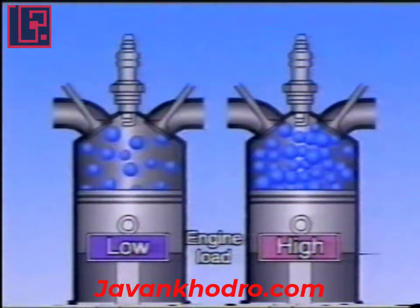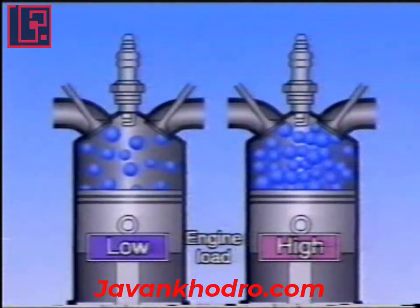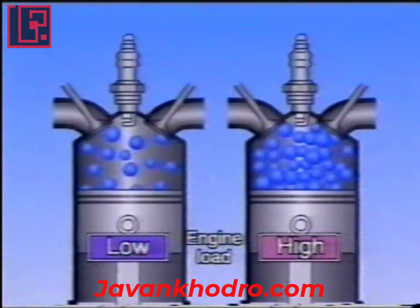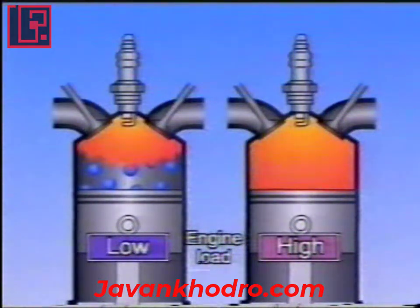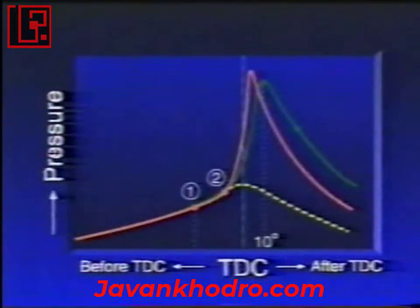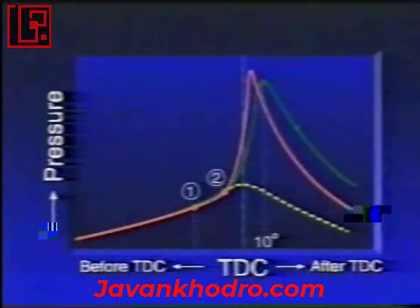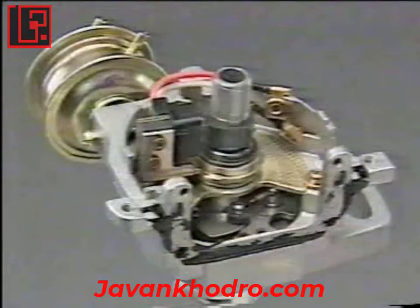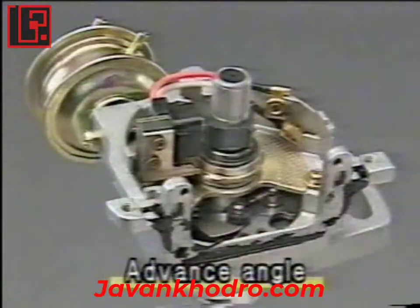If the load on the engine increases, the volume of the air-fuel mixture and the compression pressure inside the cylinder increase. The temperature of the air-fuel mixture goes up, and so the mixture burns faster. As a result, the combustion time gets shorter. In this case, the ignition timing has to be retarded. It is changed according to the engine speed and driving conditions. This is achieved by altering the ignition advance angle, which is controlled by the advancer, incorporated in the distributor.